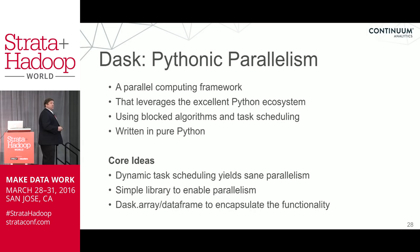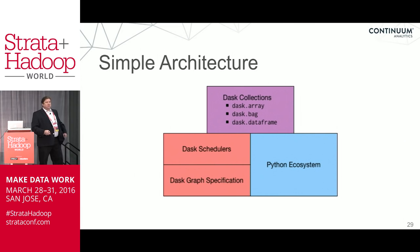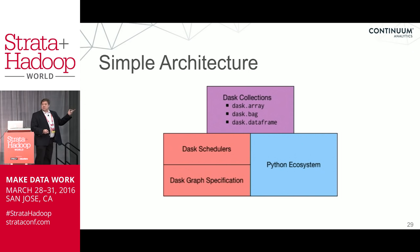We basically write the connective tissue — that distribution concept — and then reuse all the code out there in the great Python ecosystem. The Dask architecture is simple: you have the whole Python ecosystem, a Dask graph specification, Dask schedulers that run that specification, and then collections on top that help you build graphs so you don't have to do it manually. You can just write array code or DataFrame code and get sane solutions.